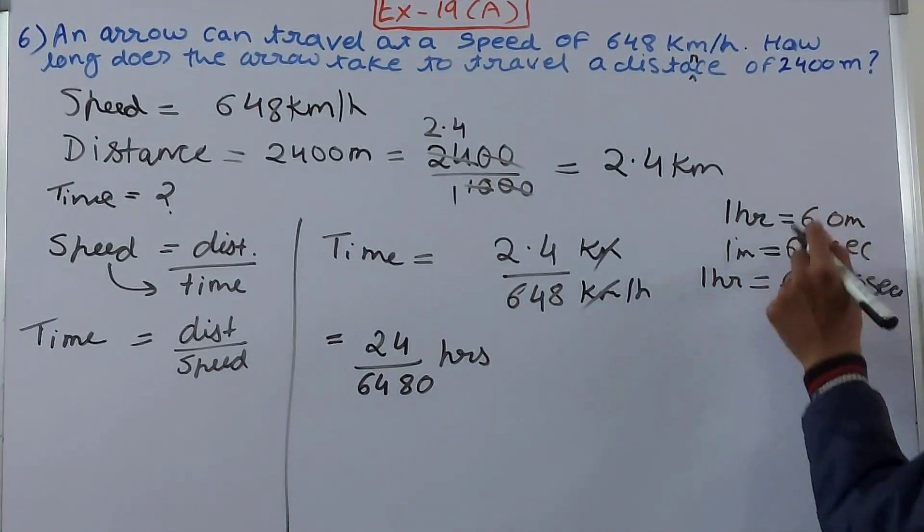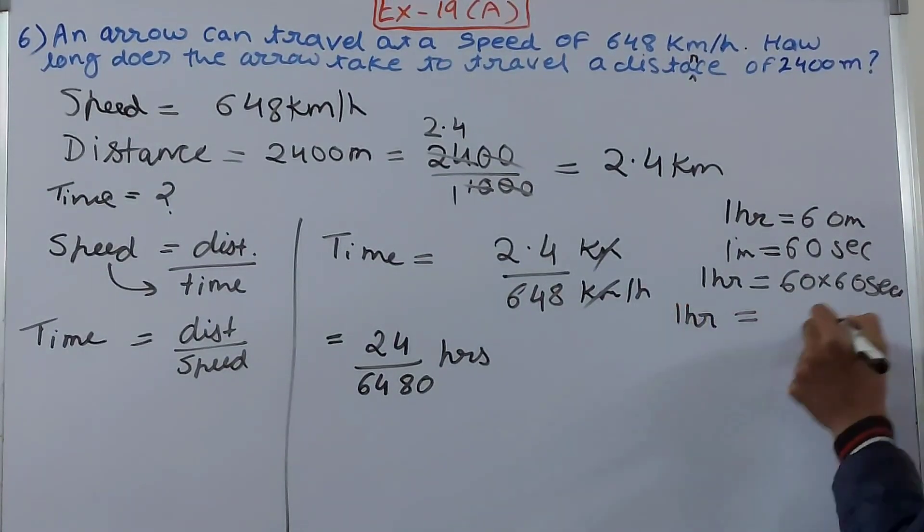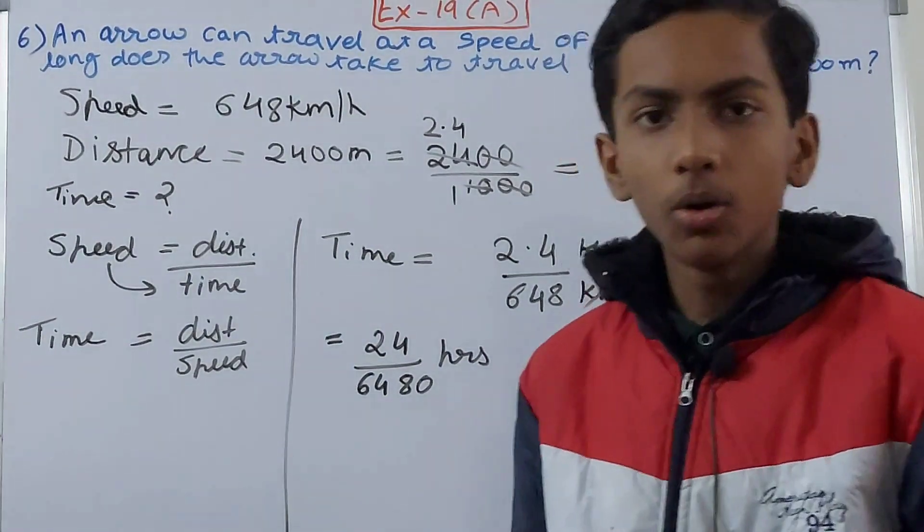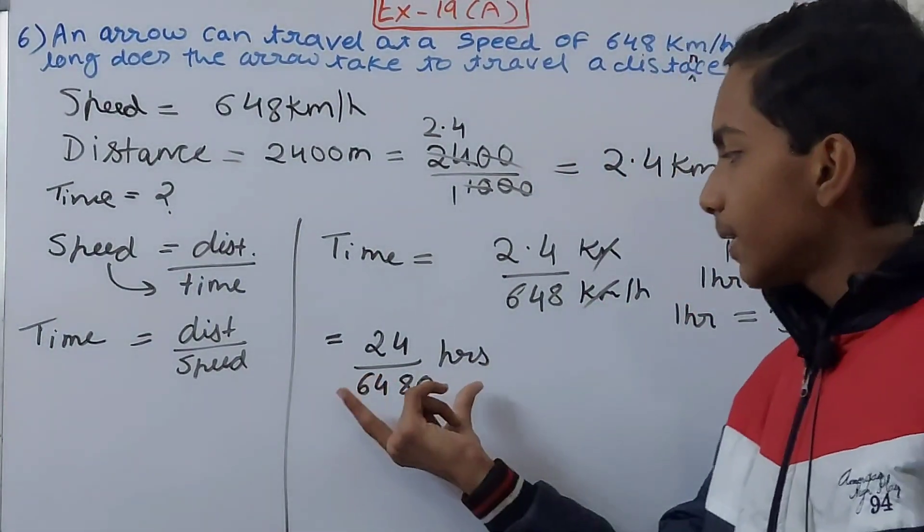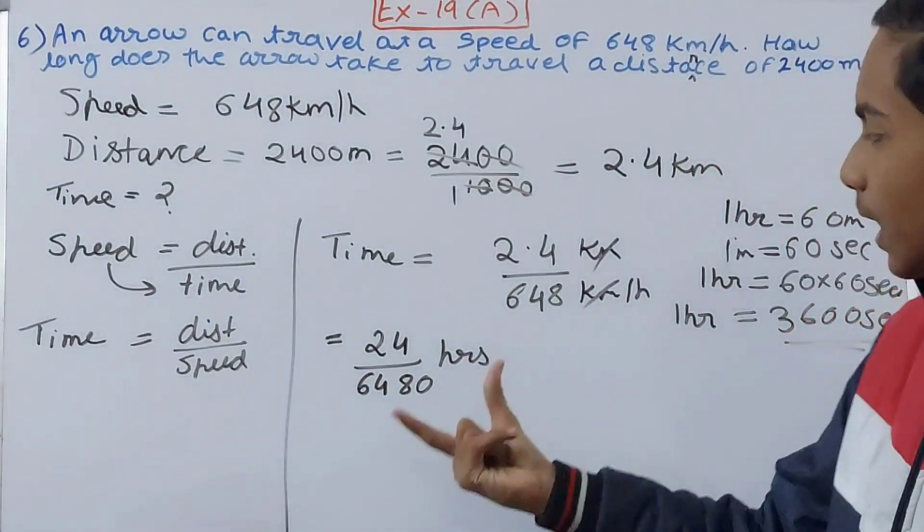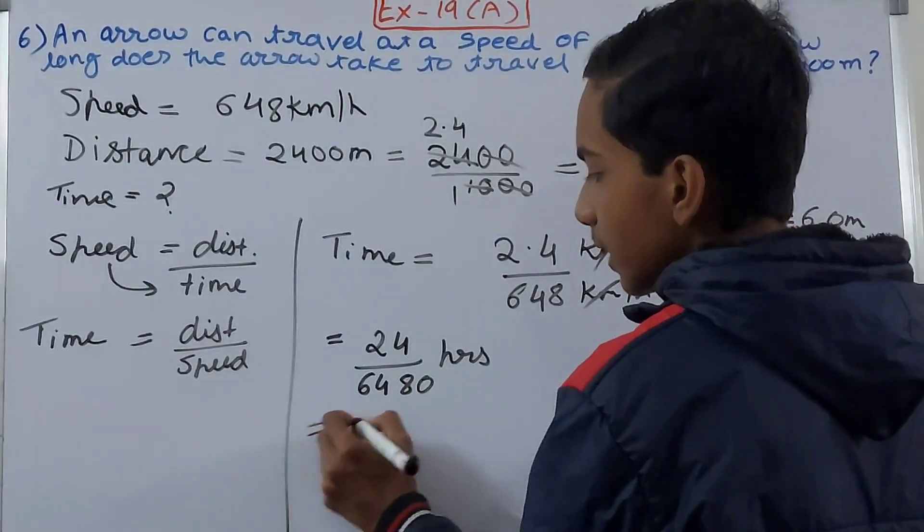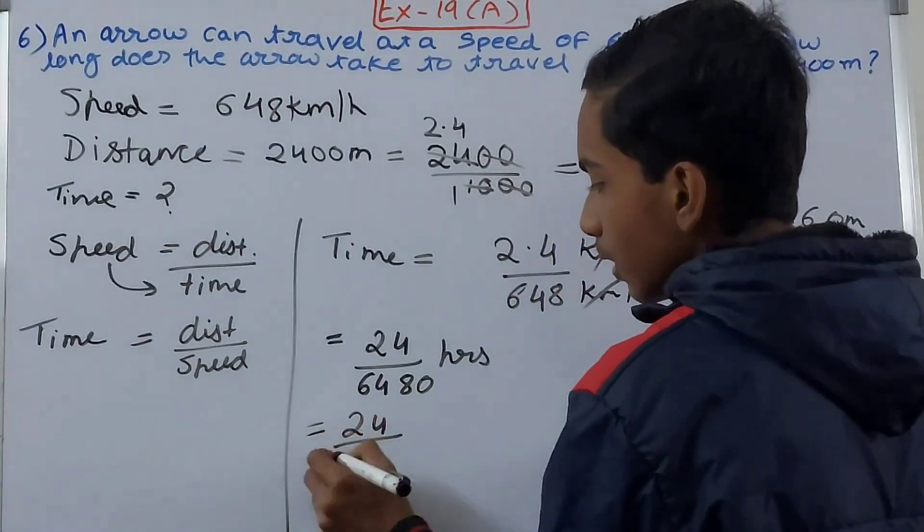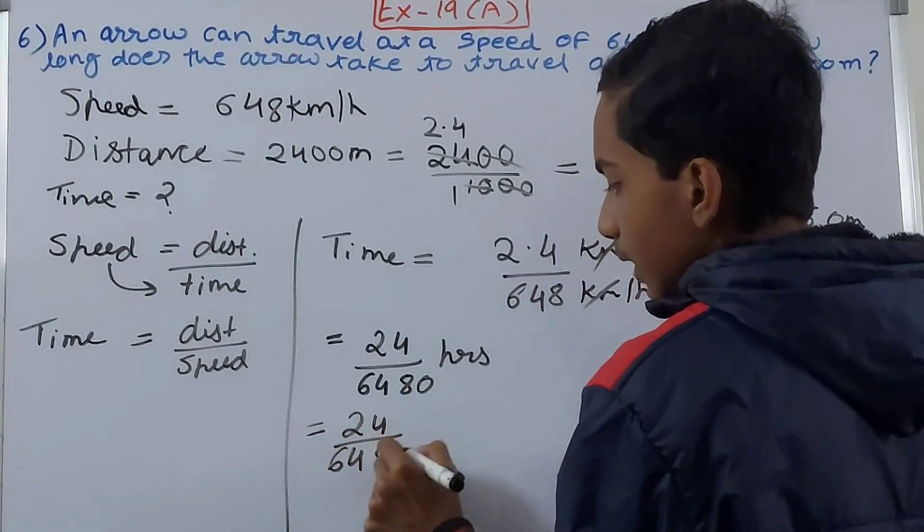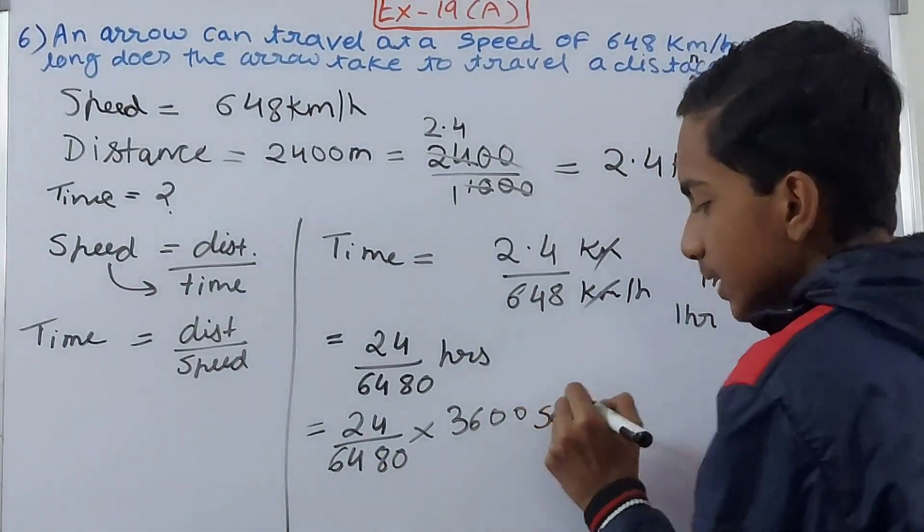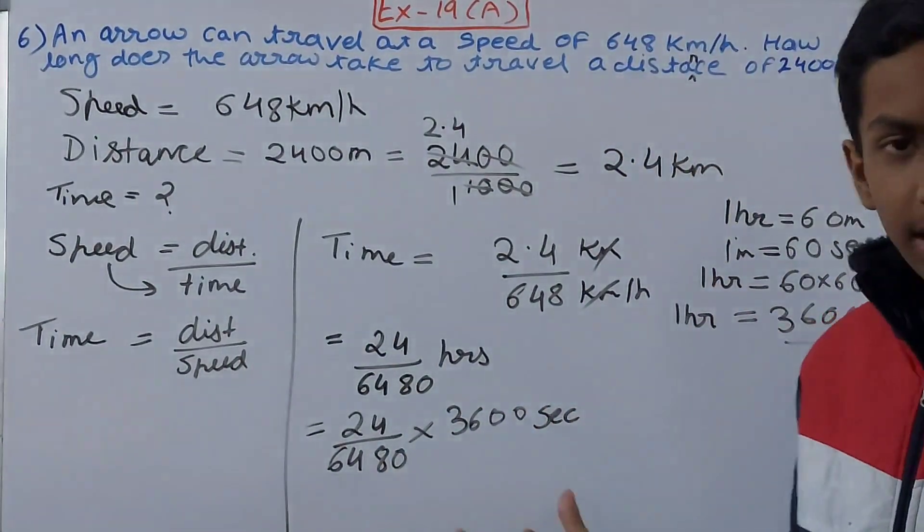So basically if we are going from one hour, this becomes 60 into 60 seconds. We multiply both of them. So what do we get here? One hour equals 60 into 60, that is 3600 seconds. There are 3600 seconds in one hour. So now you see that if these many hours, and if we convert this into seconds, so we will multiply it by 3600. So 24 upon 6480 into 3600, and this will be in seconds, so we will get the answer in seconds.